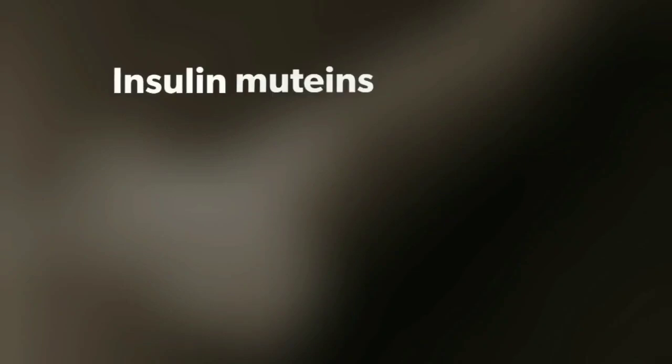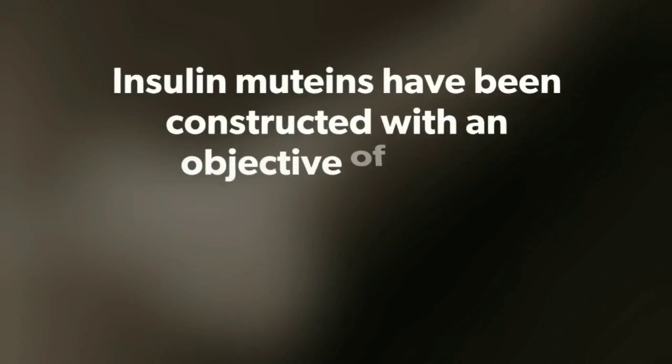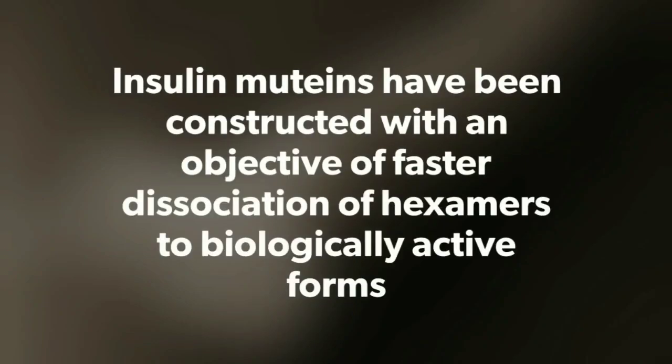Attempts have been made in recent years to produce second generation insulin by site-directed mutagenesis and protein engineering. These are termed as mutants. Insulin mutants have been constructed with the objective of faster dissociation of hexamers to biologically active forms.